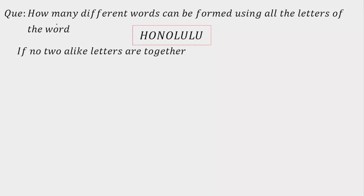Today we are going to solve a question in permutation combination. The question is: how many different words can be formed using the letters of the word Honolulu, if no two alike letters are together? So, let's start.